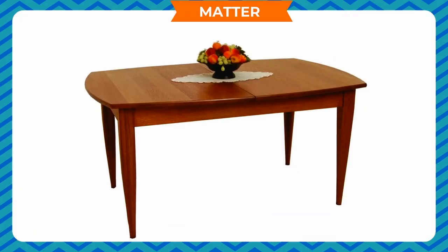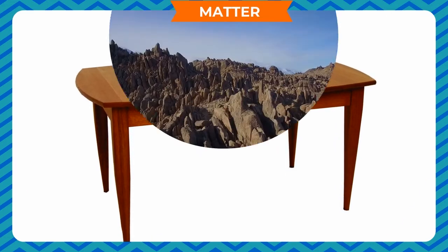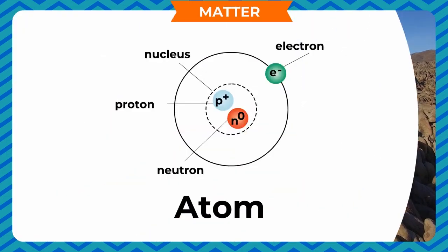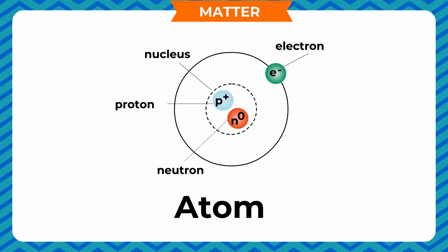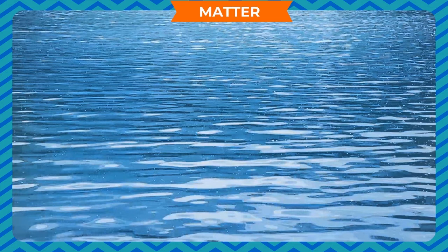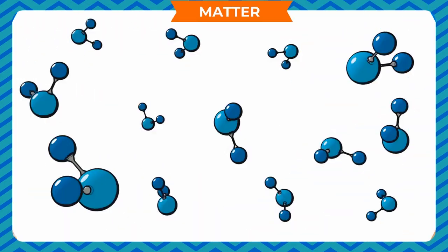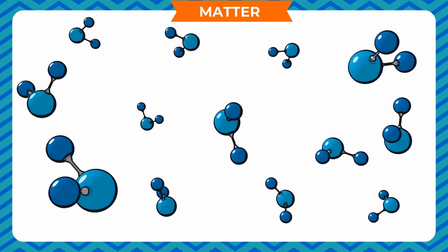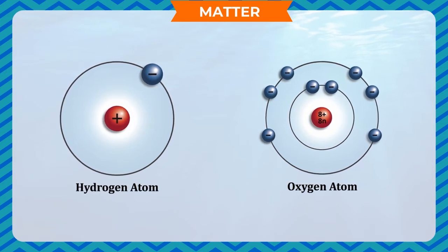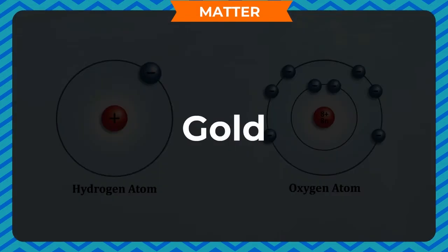Matter: all objects occupy space and have mass, and all of them are made up of matter. Anything that occupies space and has mass is matter — it includes all substances of which the universe is made up. The smallest particle of matter is the atom. However, the smallest particle of water is not a water atom, because water is made up of two different kinds of atoms. The smallest particle of water contains two atoms of hydrogen and one atom of oxygen, forming one molecule of water.